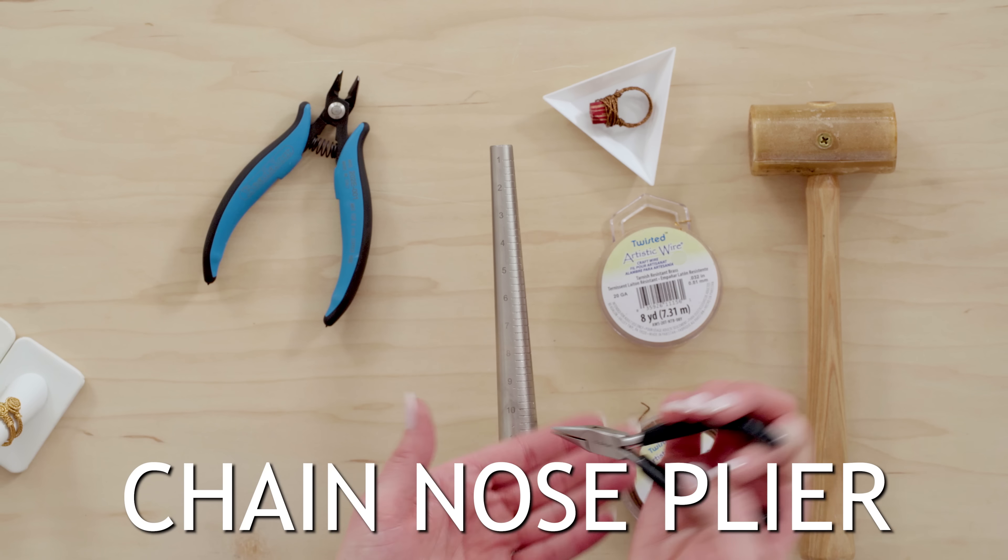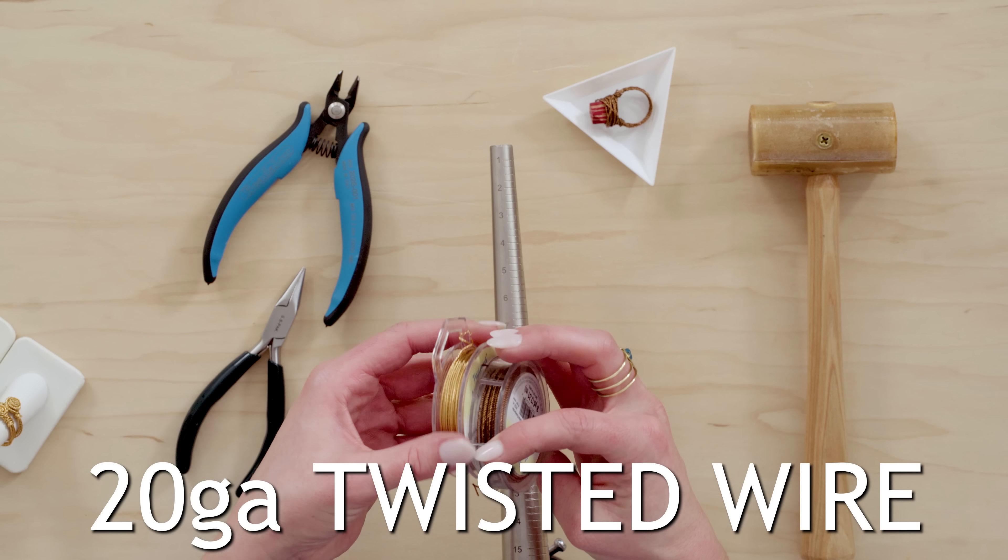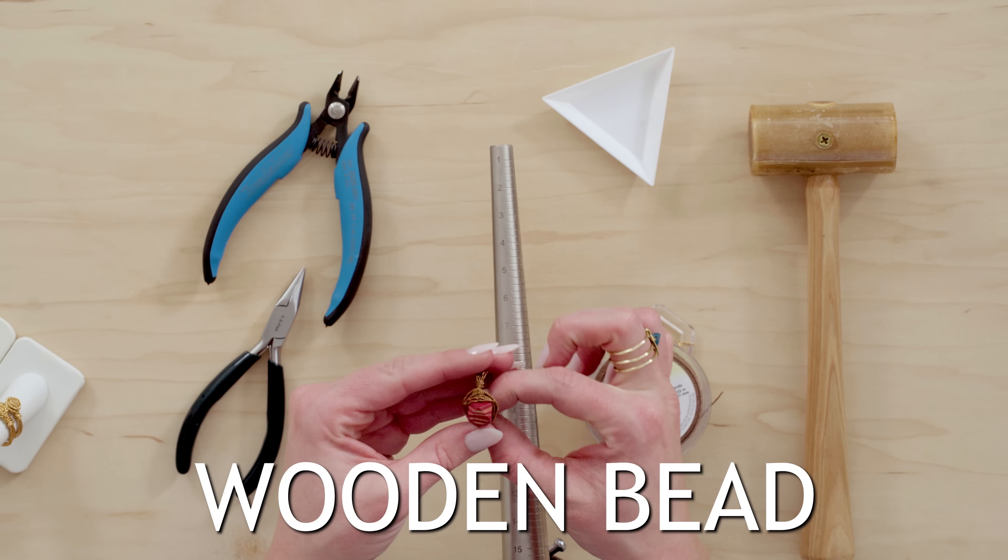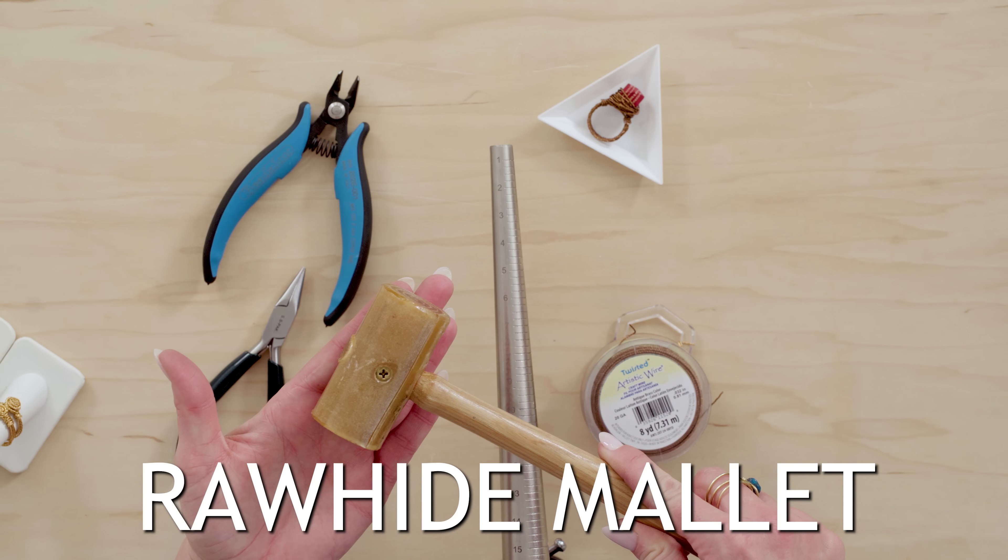All right let's go back over the tools and supplies we used for this project. We used our ring mandrel, our flush cutter, our chain nose plier, 20 gauge twisted wire, we had our wooden bead, and our rawhide mallet.